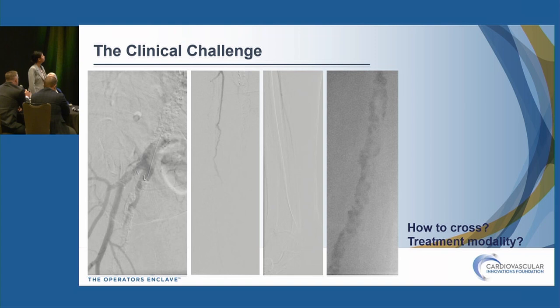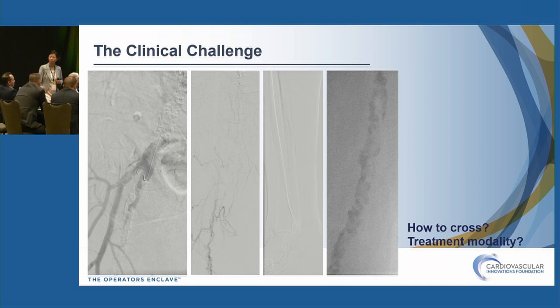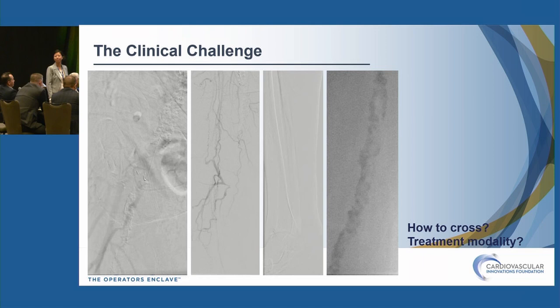Panel discussion continues: Getting across is going to be a real challenge — stiff-angled glide wire with a crossing catheter, likely going sub-intimal, possibly needing to go up from below. IVL with Supera is coming, with DCB prior to Supera. Another panelist agrees: trying to go luminal but most likely the easiest path is sub-intimal or re-entry, then IVL and probably DES at the end.